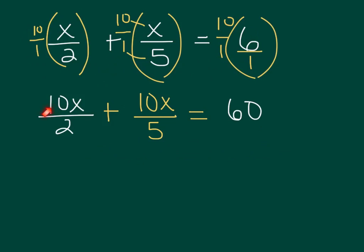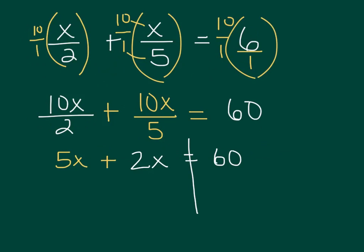Now I'm going to divide these out. Remember, this fraction line can mean divide. So 10x divided by 2 — if I split 10x into two parts, I get 5x. Plus, 10x divided by 5 is 2x. That equals 60. Now I'm going to draw my line down through the equal sign and combine like terms: 5x plus 2x gives me 7x equals 60.